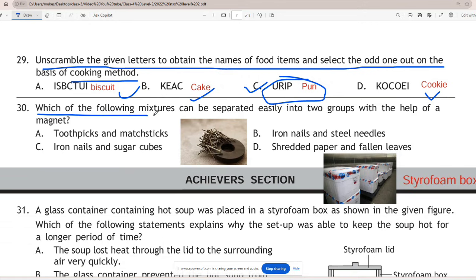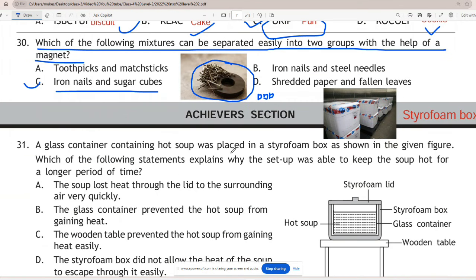Question 30: Which of the following mixtures can be separated easily into two groups with the help of a magnet? The correct option is C - iron nails and sugar cubes. It is understood that a magnet attracts steel and iron objects. Therefore, in option C, all iron nails are removed using a magnet, leaving only the sugar cubes. This method effectively separates the two materials. Now let's solve the last achievers section.